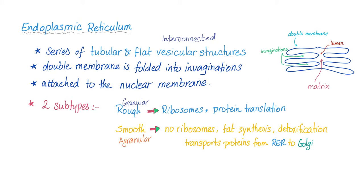It's attached to the nuclear membrane — that's why the nuclear membrane is studded with ribosomes. It has two subtypes: granular or rough endoplasmic reticulum. Why granular? Because it has ribosomes. Ribosomes help in protein translation.